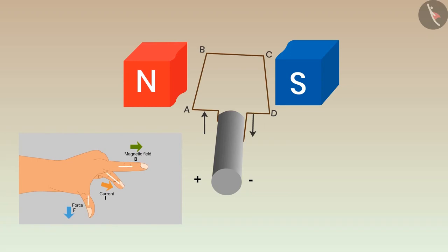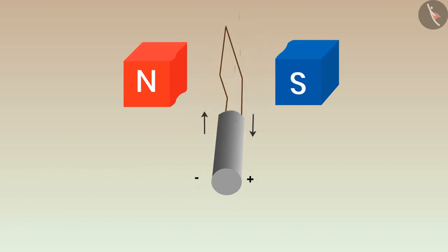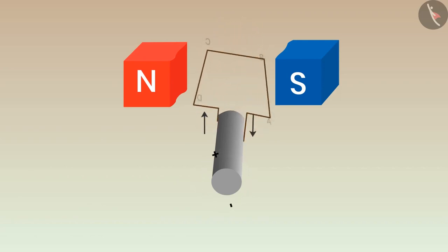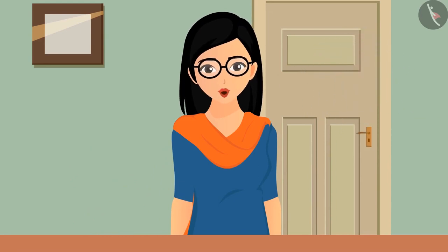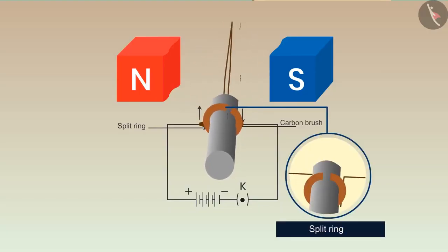Applying the same rule on arm CD: since the current is flowing in the outward direction on CD, the force will be exerted upwards. Due to forces acting on both arms of the coil, it starts rotating. After half a cycle, AB and CD will interchange their positions and the direction of current changes in both arms. But a fan or cooler always rotates in one direction only — so what are we missing in the motor to keep it rotating in one direction?